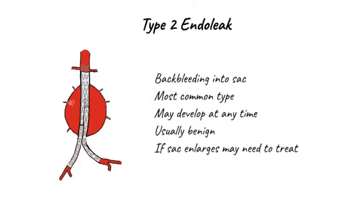The most common type of endoleak is a type 2 endoleak. In this type, back bleeding occurs into the sac, usually from lumbar vessels, but sometimes from the inferior mesenteric artery or the median sacral artery. These leaks can develop at any time following graft implantation. Usually they are benign and we just keep an eye on them, but if the sac starts to enlarge, the endoleak may need to be treated, most often by embolisation.